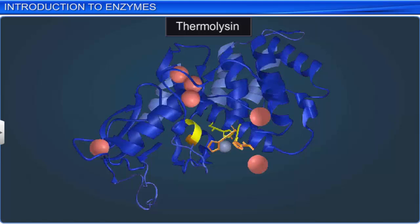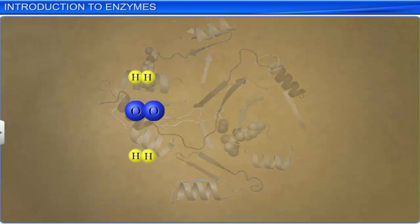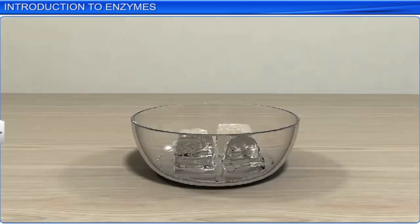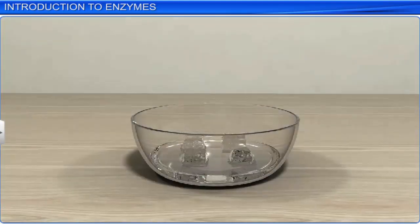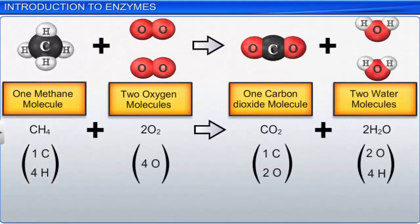To understand the working of enzymes, we'll begin by learning more about chemical reactions. Chemical compounds undergo physical and chemical changes. When a compound changes shape without breaking its existing bonds, it is said to be a physical change — for example, ice melting to form water. On the other hand, when the bonds in a compound are broken and new bonds are formed during transformation, it is called a chemical reaction.